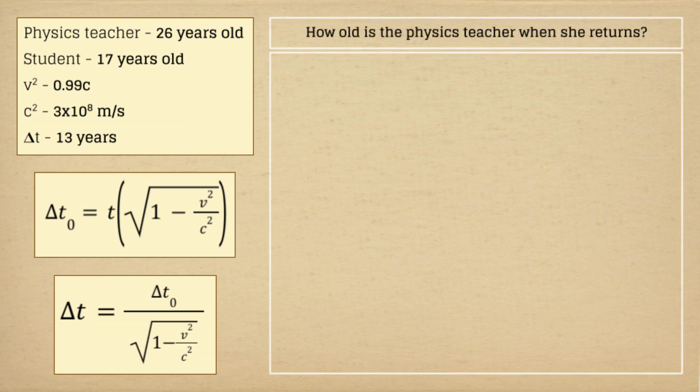Now, let us answer the first part of the first question. How old is the physics teacher when she returns? In order for us to know her age after her rocket trip, we would use this equation for the change in proper time. All of the values have already been listed, so all we need to do is plug them into our equation.